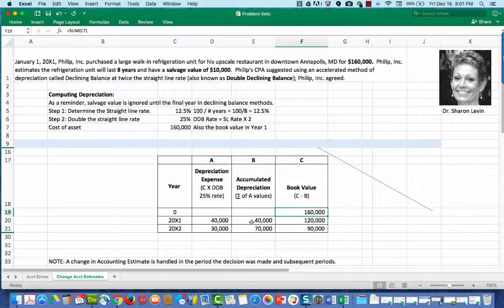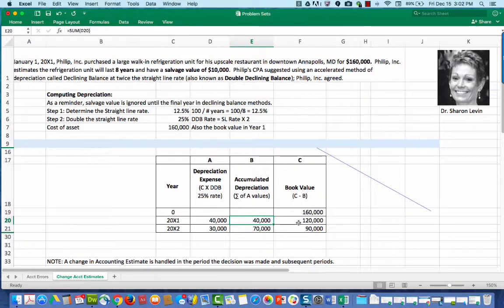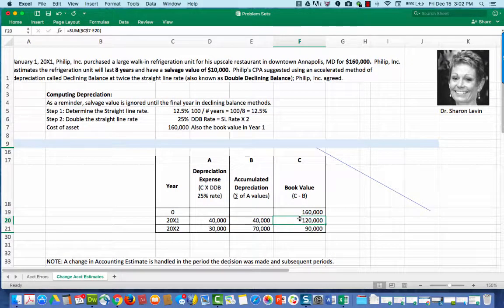So $40,000, that's the only thing in column A so far at the end of 2000X1. Column C is the book value. To compute the book value, you take what is in column C, for example, $160,000 at the beginning of the period, subtract out the accumulated depreciation of $40,000 and the new book value at the end of 2000X1 is $120,000.